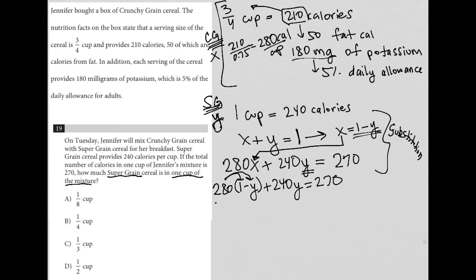So 280 times 1 is 280 minus 280 times Y, which is minus 280Y plus 240Y equals 270. So I have 280 here. Negative 280Y plus 240Y equals 270.